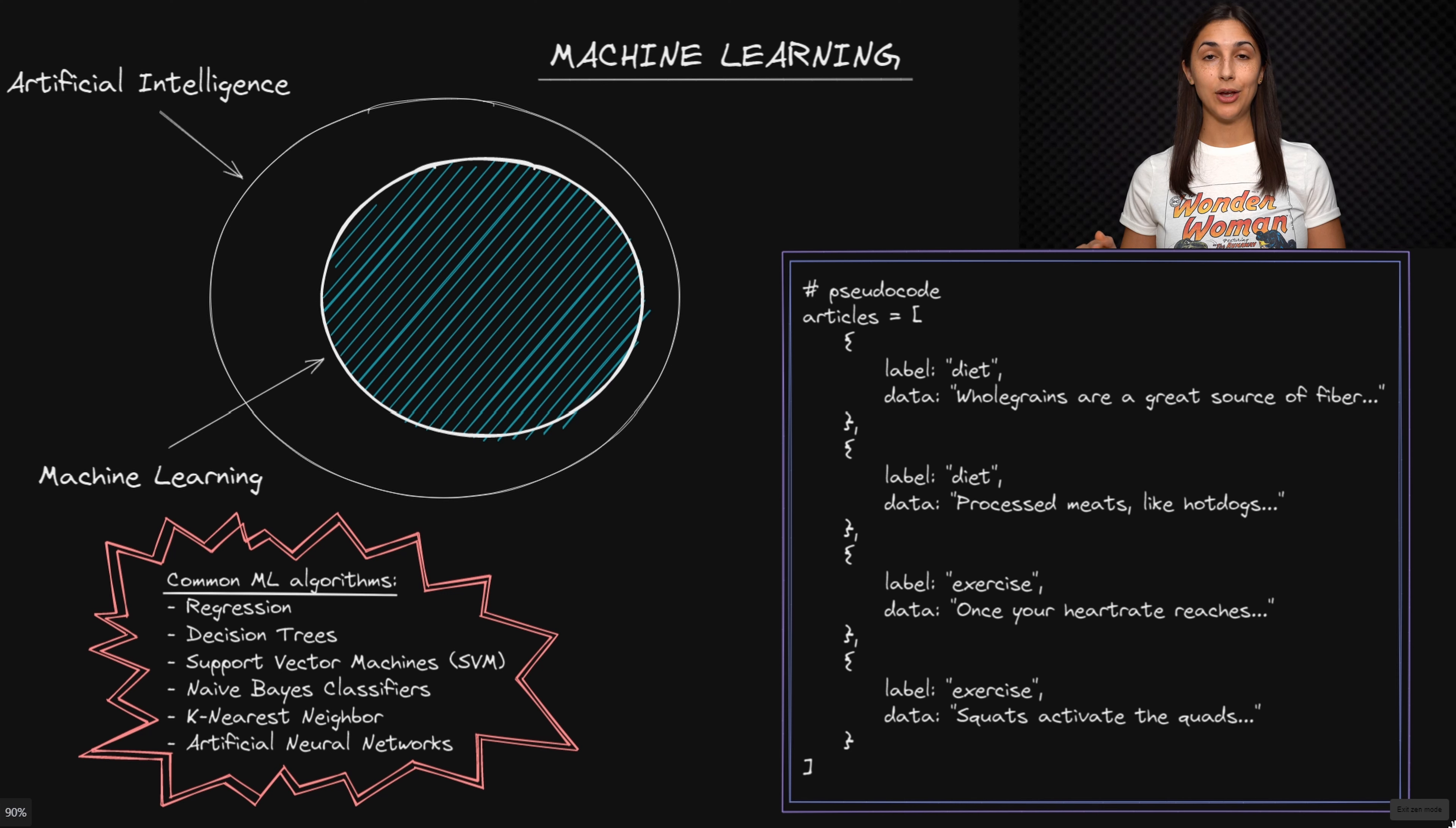We could have a program that goes through an article, counts up all of the words that fall into the diet category, and all of the words that fall into the exercise category, and compare whichever category has the higher word count is what the article will be labeled as. And remember, these words have been chosen by the developer.